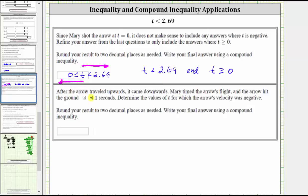And now for the last part, after the arrow traveled upwards, it came downwards. Mary timed the arrow's flight and the arrow hit the ground at 4.1 seconds. Determine the values of t for which the arrow's velocity was negative. Let's model the information on a number line. The important values of t are t equals zero, t equals 2.69, and t equals 4.1.